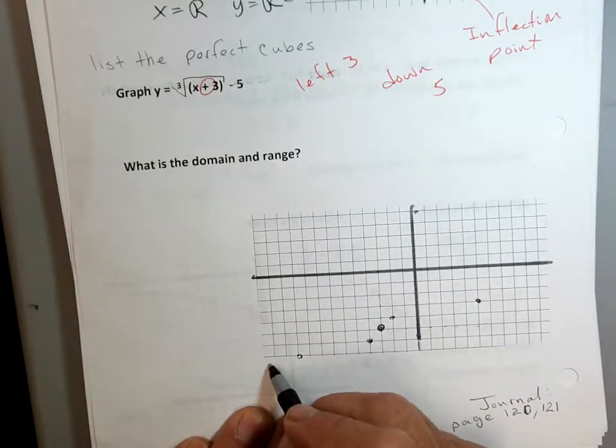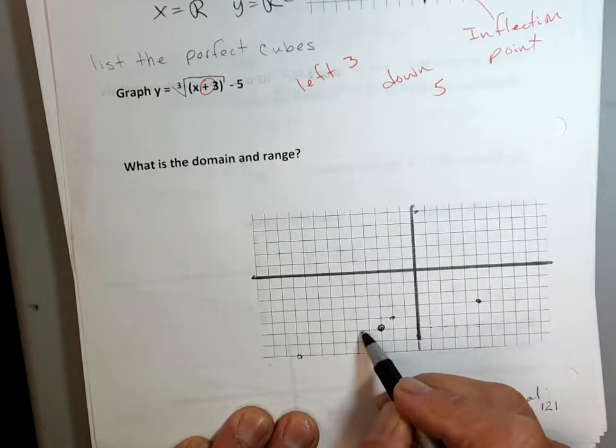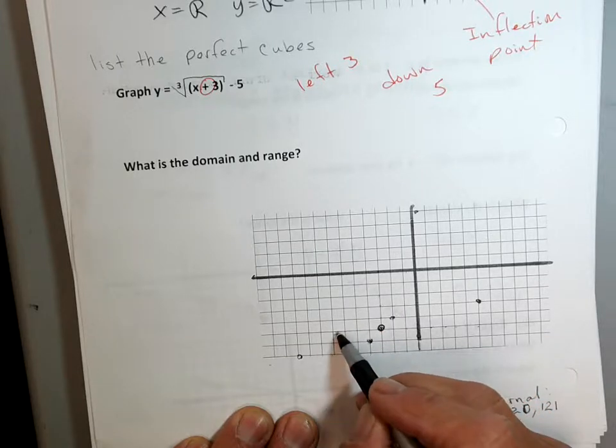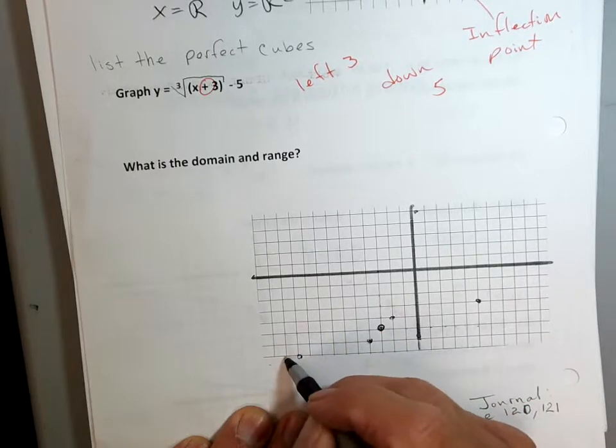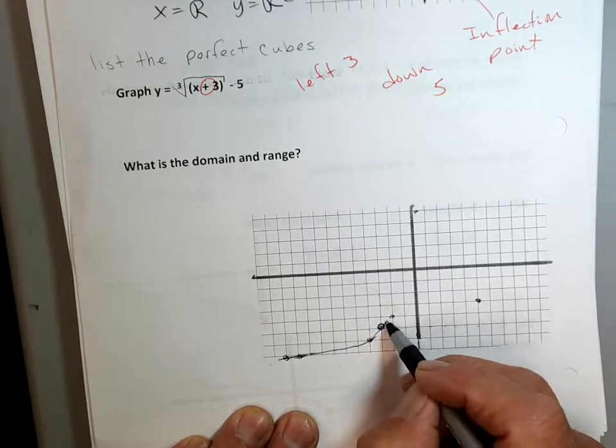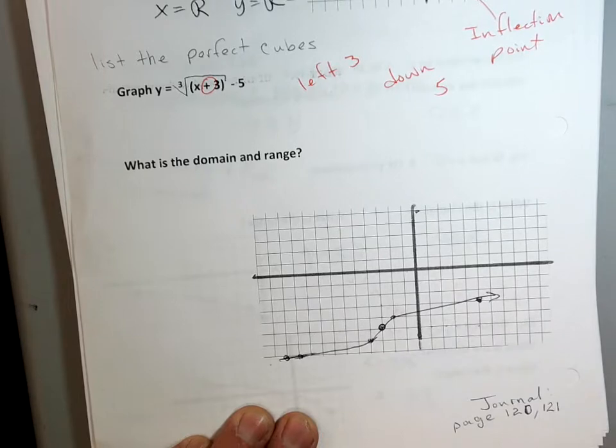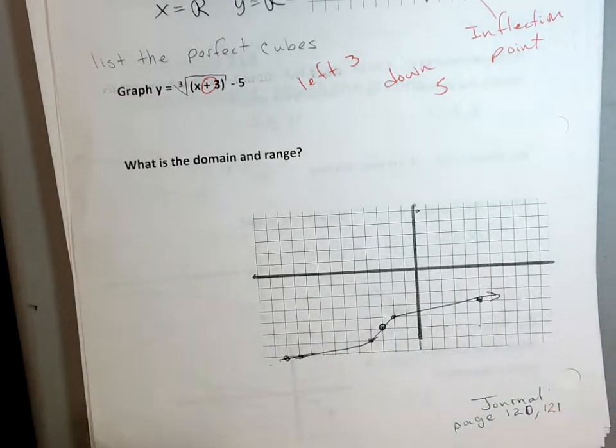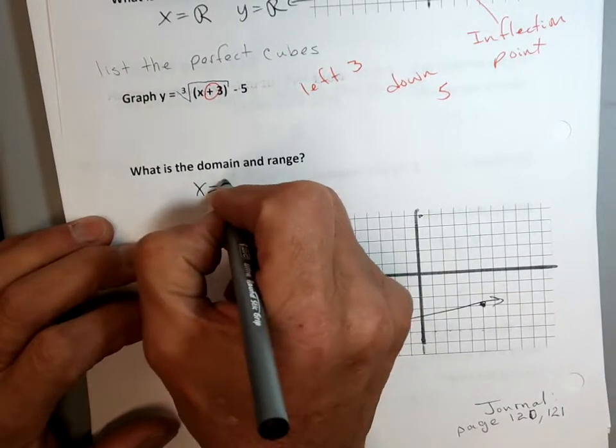I didn't go over 1 far enough, yeah. OK, now, let's take a look at this. Domain, right? All real numbers, you guys agree? Range, all real numbers.